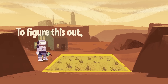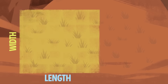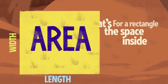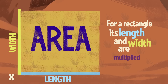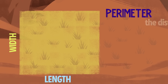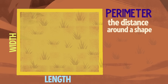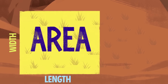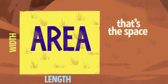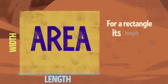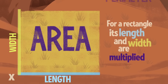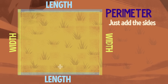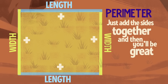To figure this out, you have to find the area — that's the space inside. For a rectangle, it's length times width. And perimeter — the distance around a shape — just add the sides together and then you'll be great. Area: that's the space inside. For a rectangle, it's length times width. And perimeter: the distance around a shape, just add the sides together and then you'll be great.